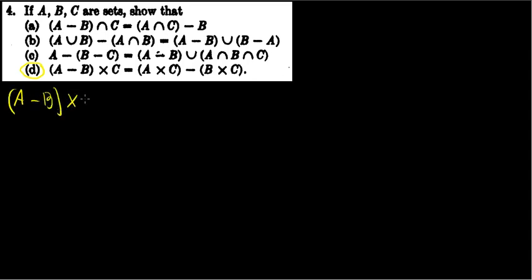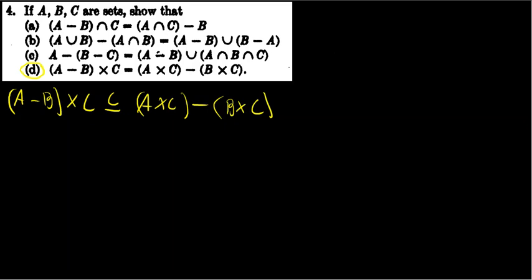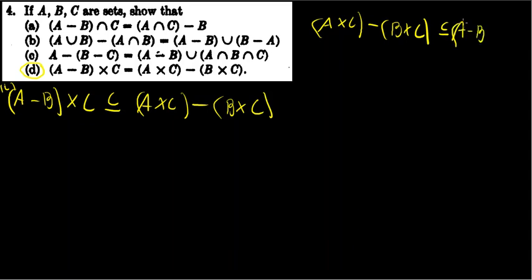We want to prove this set equality, and to do that we're going to do similar to how we've done in previous problems: show that the left-hand side set (A-B)×C is a subset of A×C - B×C (Part 1), and vice versa, that A×C - B×C is a subset of (A-B)×C (Part 2).